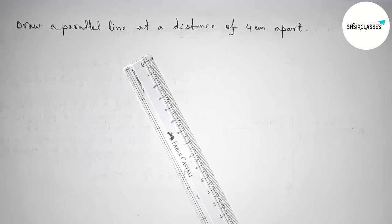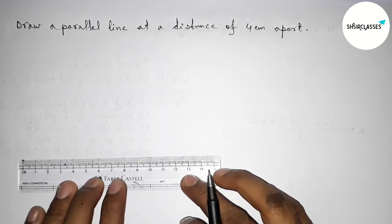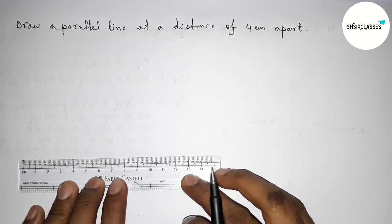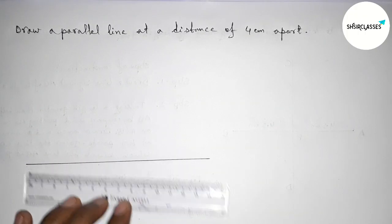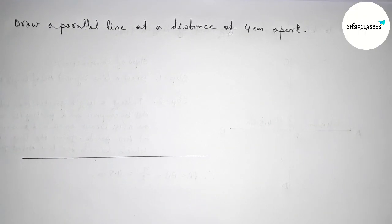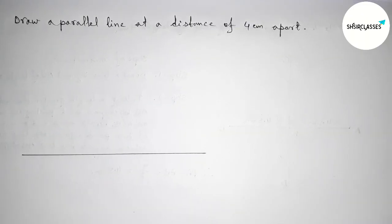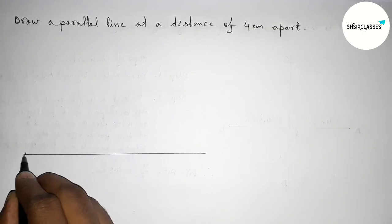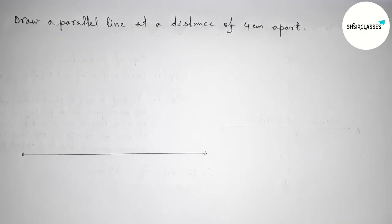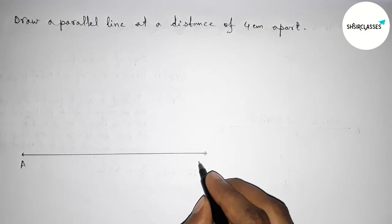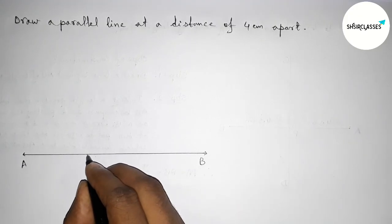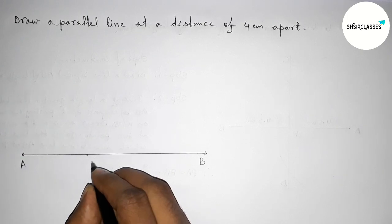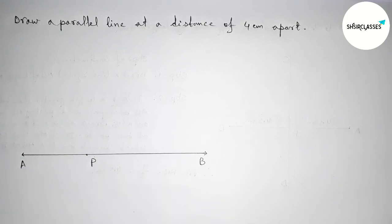First of all, with the help of a scale, we have to draw a line segment of any length. Drawing here a line segment of any length by this way, taking arrow marks on both sides, and taking here points A and here B. Next, taking here any point P — you can choose this point as your choice.